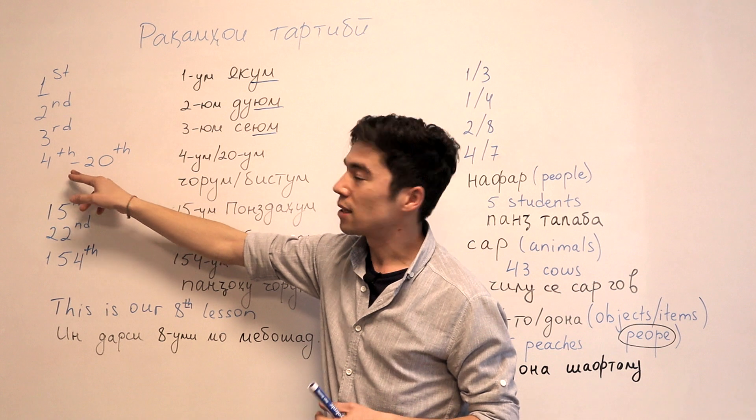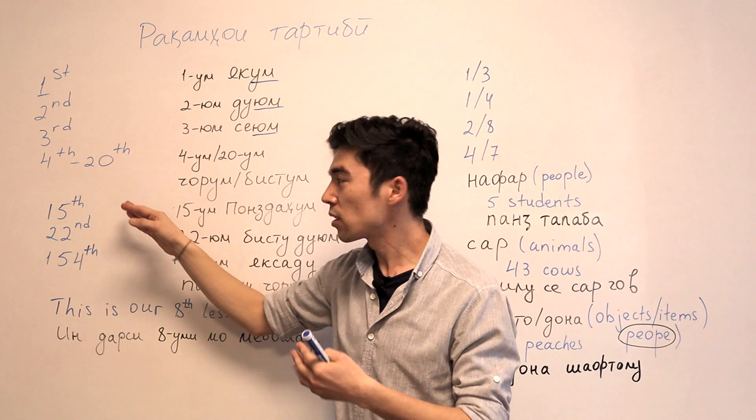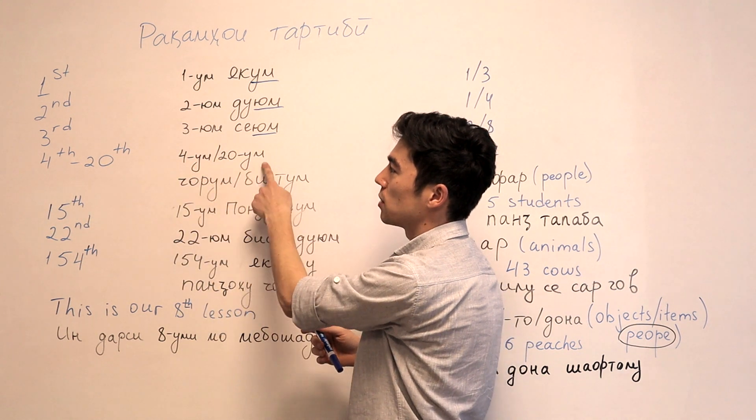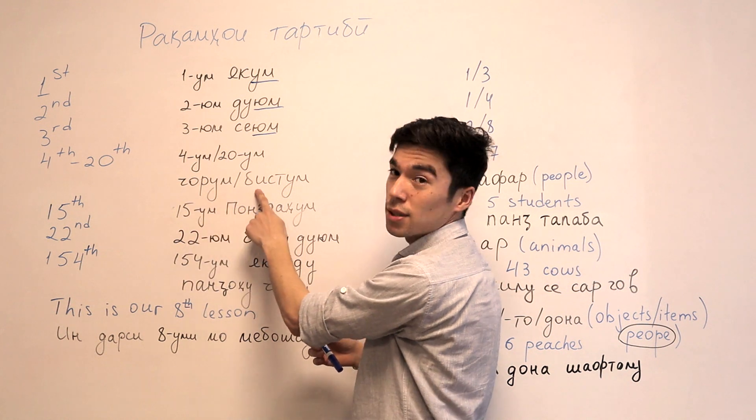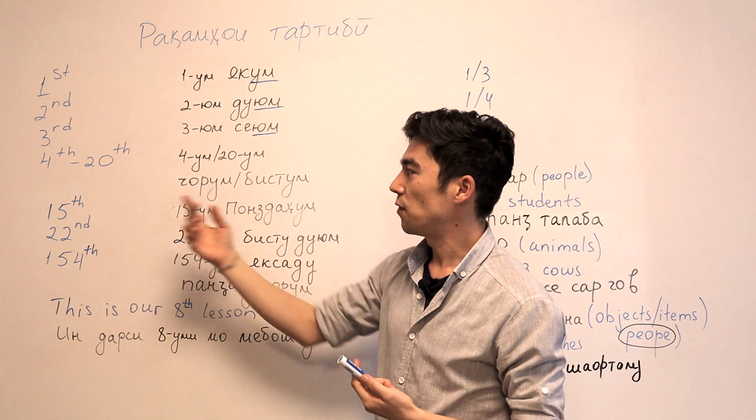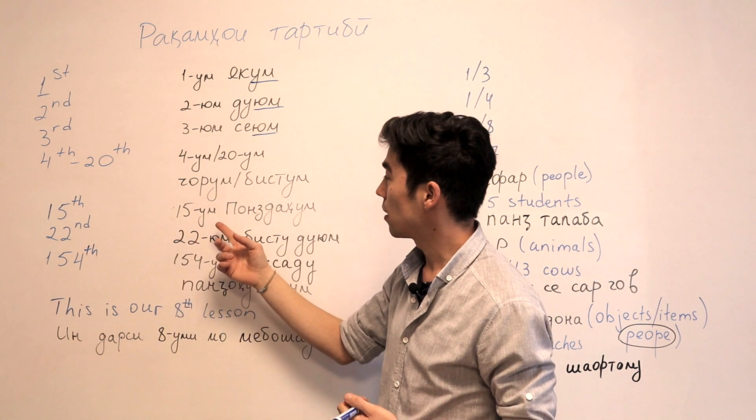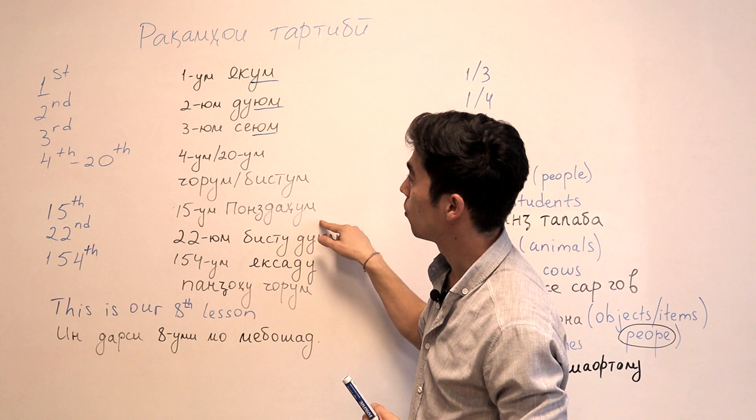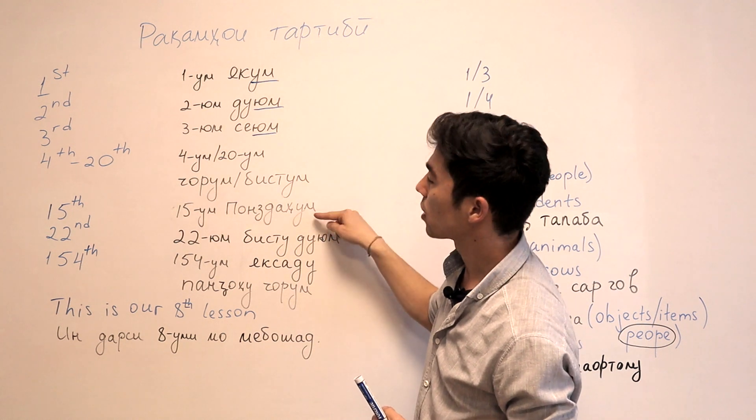So 4th until 20th, the same like in English. We say CHORUM or BISTUM here. CHORUM, BISTUM. And 15th, for example, will be PONZDAHUM. So you see the same UM like here. PONZDAHUM.